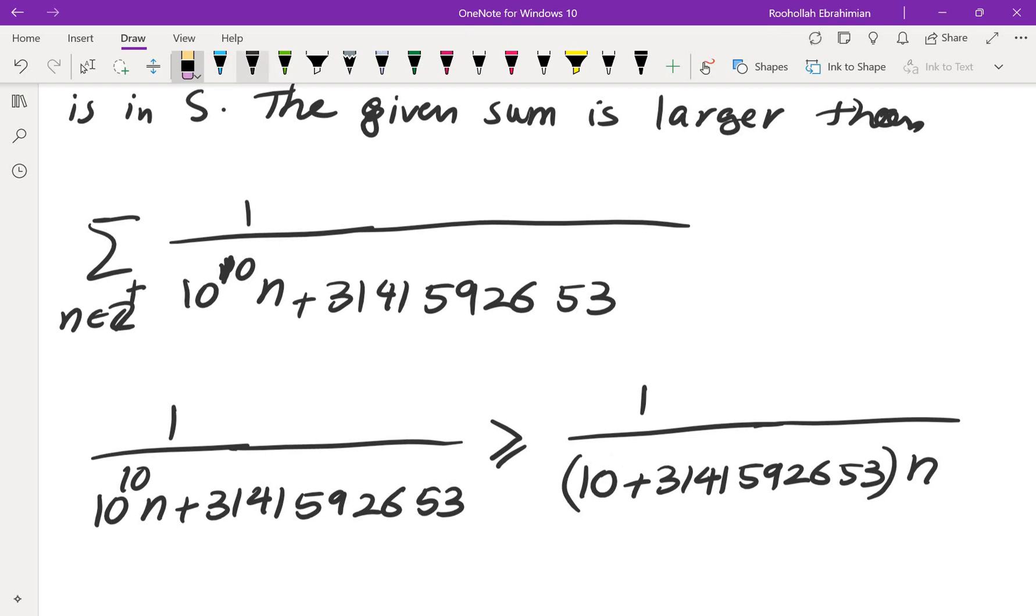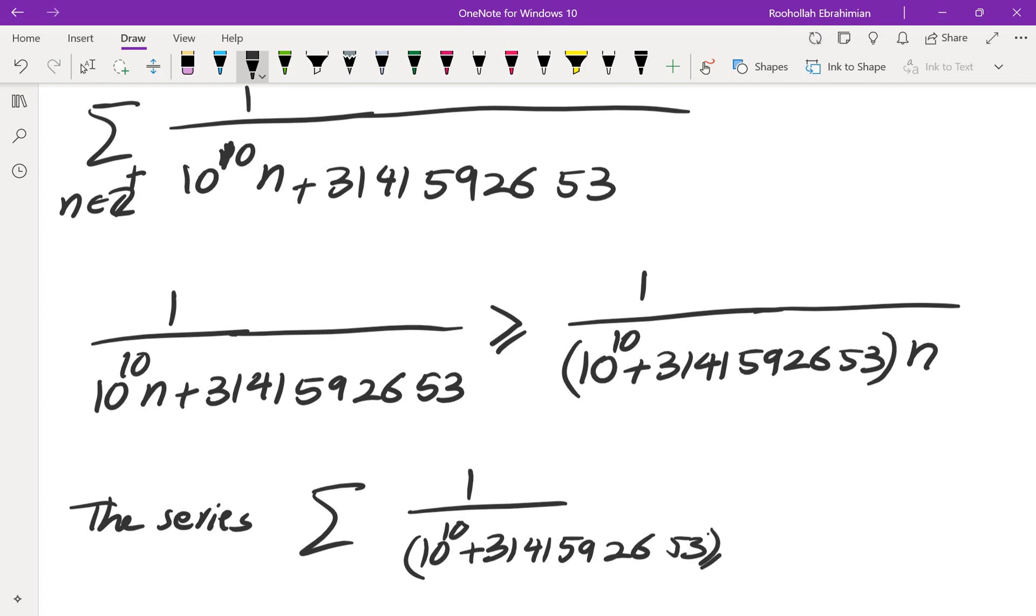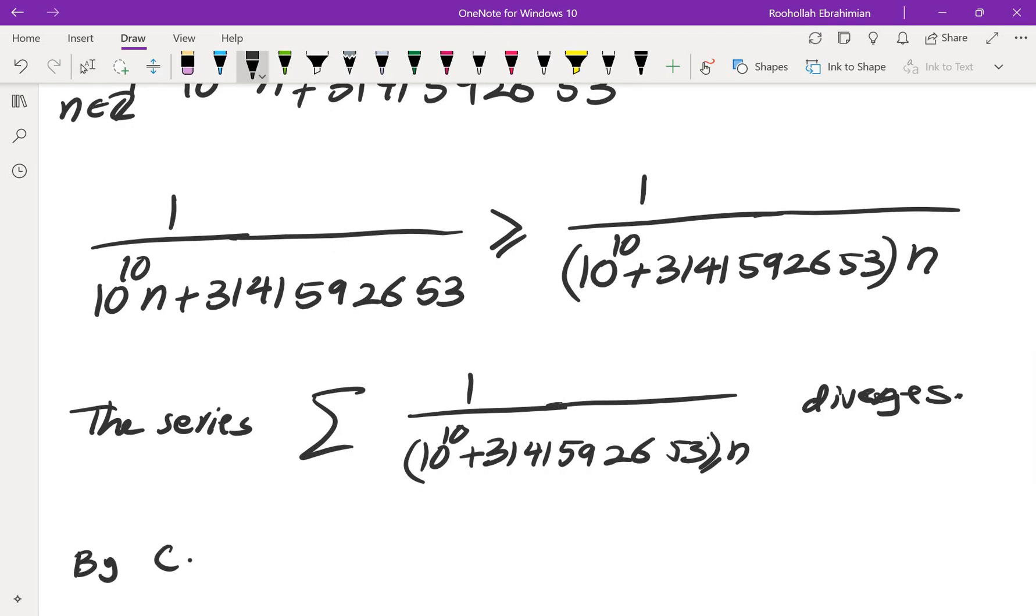And this one is, by the way, 10 to the 10. The series sum of 1 over (10^10 + 3141592653) × n diverges because this is just a multiple of the harmonic series, which means by comparison test the given series also diverges.